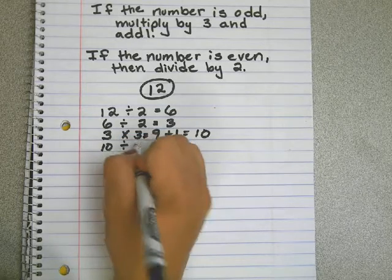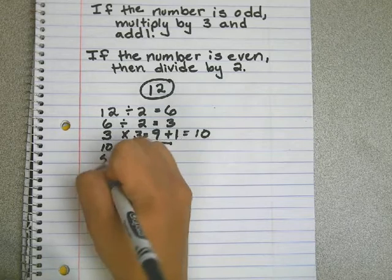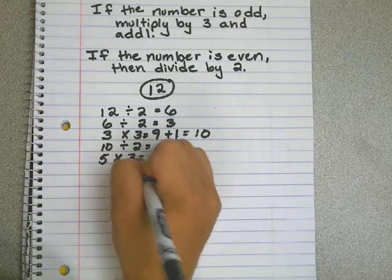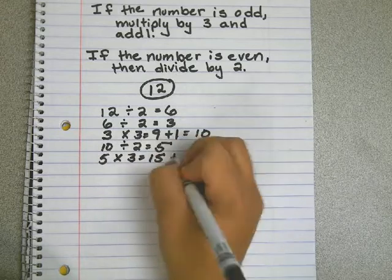Ten is even, so we divide by two and get five. Five is odd, so we do five times three plus one, which equals sixteen.